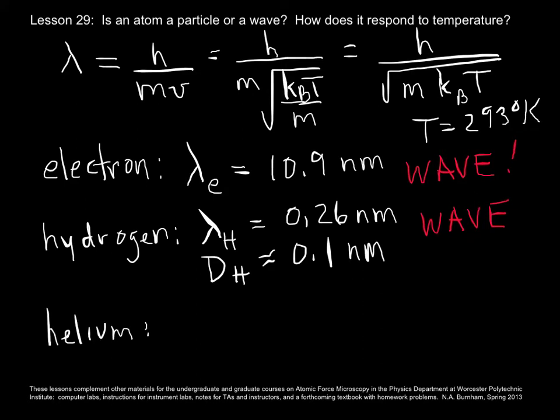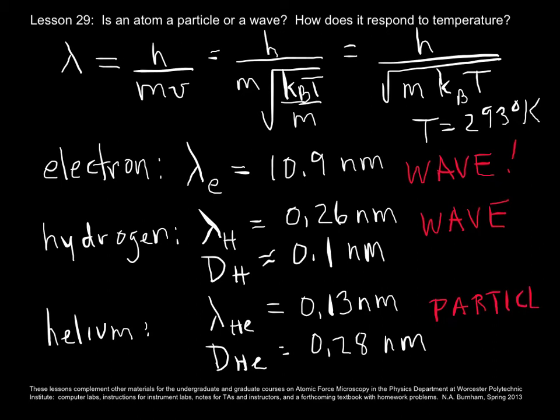What about helium? Helium, we can do the calculation in our head, because we know that helium is about 4 times bigger and more massive than hydrogen. So 4 times more massive. It's in a square root in the denominator. So that means the wavelength is half that of hydrogen. Now the diameter of helium is bigger than hydrogen. It's about 0.28 nanometers. And so now, clearly, helium is a particle at room temperature, as are all of the other elements in the periodic table that are more massive than helium.